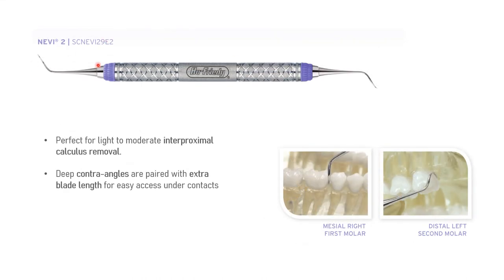Navy 2 is perfect for light to moderate interproximal calculus removal. As you can see, it has two shanks and two blades on both sides. Hu-Friedy is one of the best companies in the world for dental instruments. Navy 2 has deep contour angles and is paired with extra blade length for easy access under the contacts.